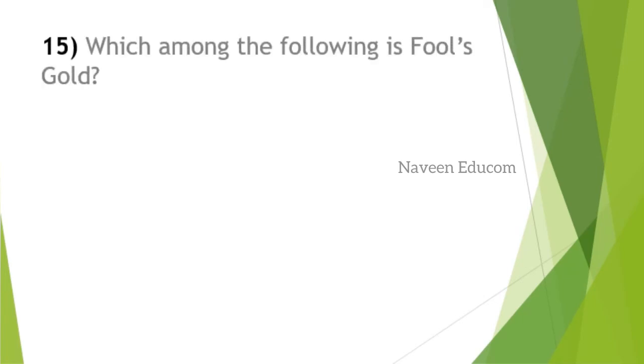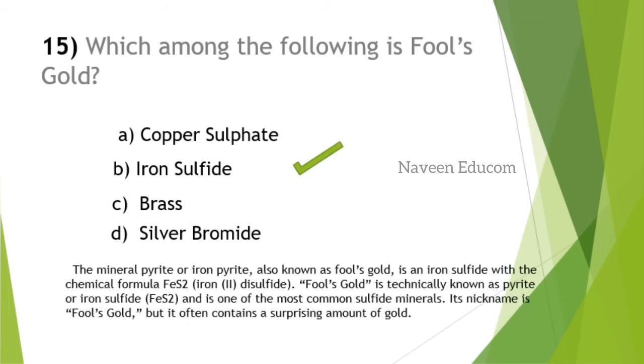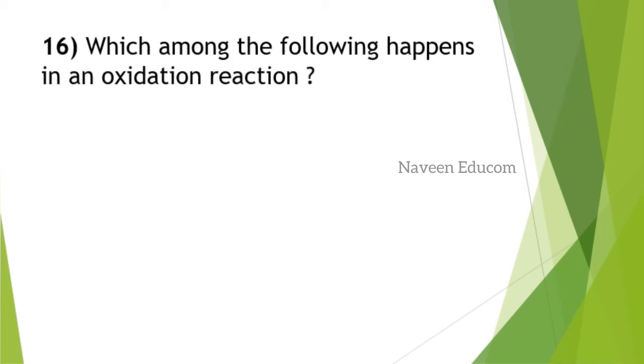Which among the following is fool's gold? Please note there is an error in the option given here. Copper sulfate is shown, but it's actually iron sulfate. Iron pyrite is option B. That was an editing error. The explanation: The mineral pyrite or iron pyrite, known as fool's gold, is an iron sulfide with chemical formula FeS2. It is a sulfide. Fool's gold is technically known as pyrite or iron sulfide and is one of the most common sulfide minerals. Its nickname is fool's gold, but it often contains a surprising amount of gold.